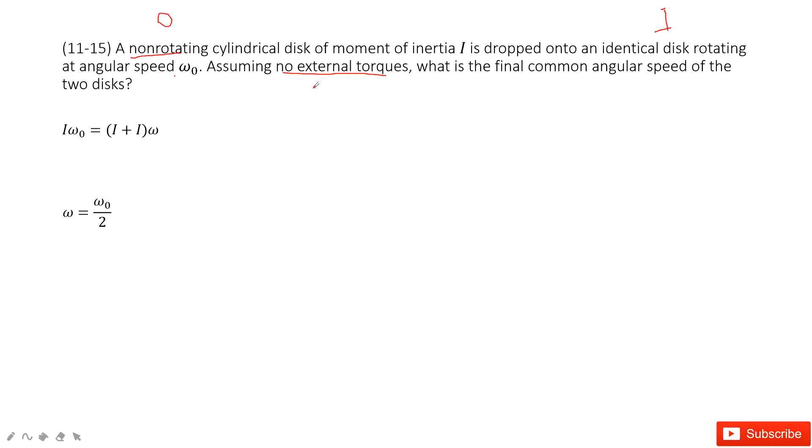So in this one, we can see the angular momentum is conserved. Initial angular momentum equals final angular momentum. Initially, we just have one disk, so I times omega naught.